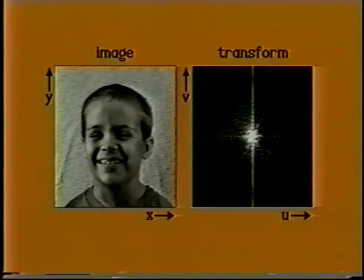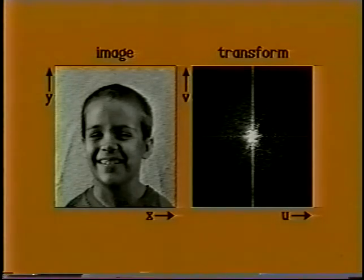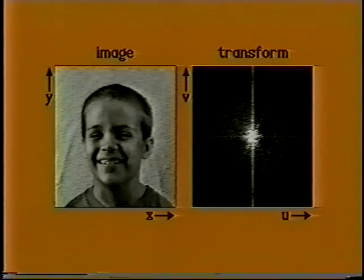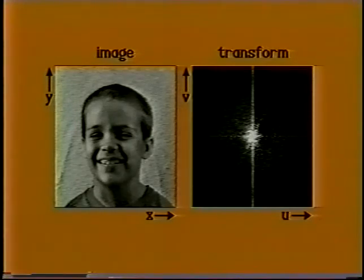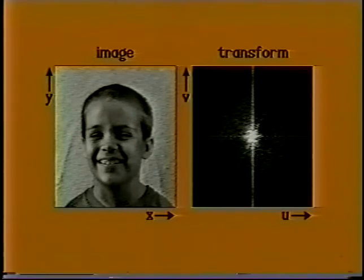The coordinates of the image, X and Y, are measured in radians. The corresponding coordinates of the Fourier transform, U and V, are measured in wavelengths. The Fourier transform space is called the UV plane.